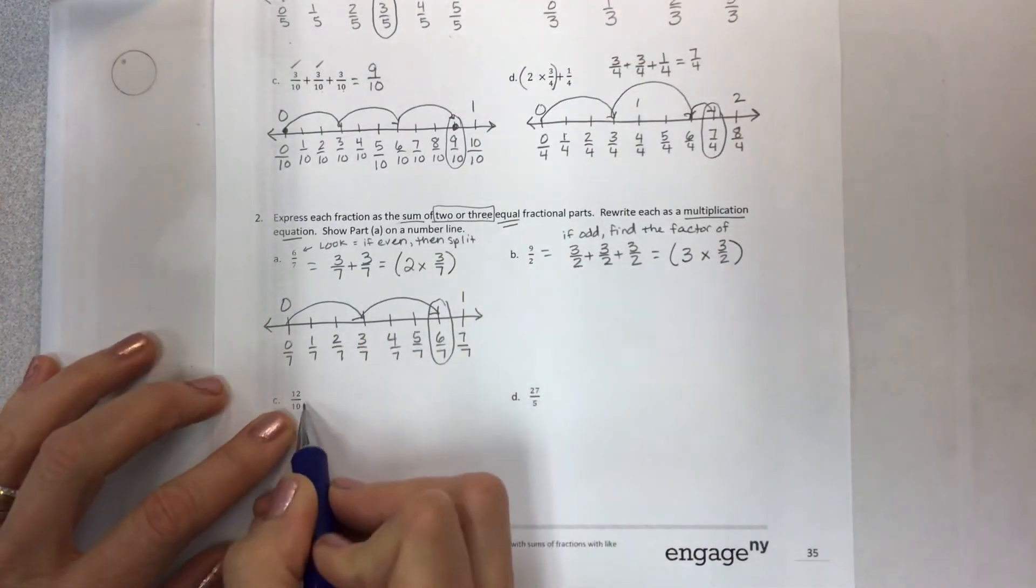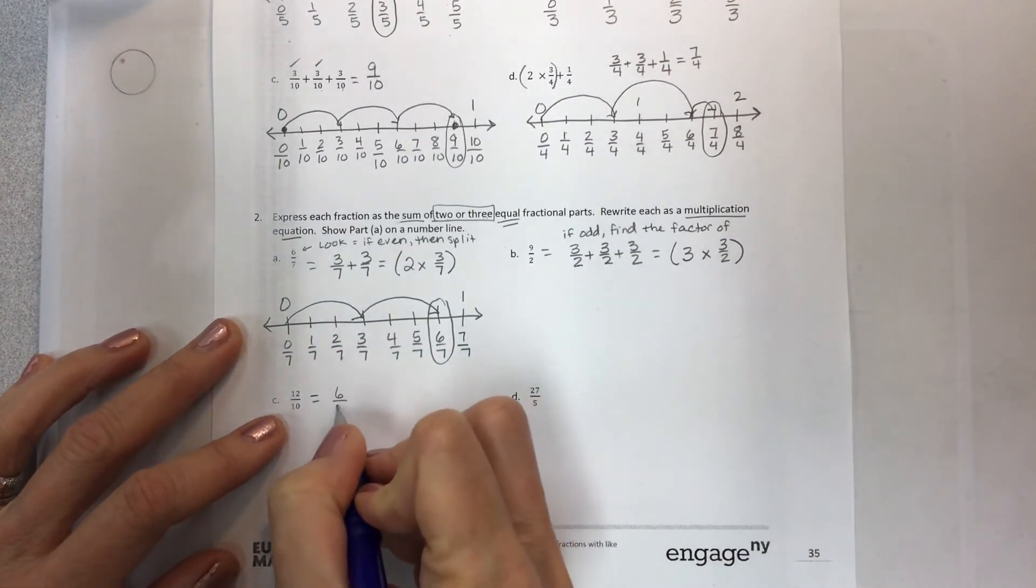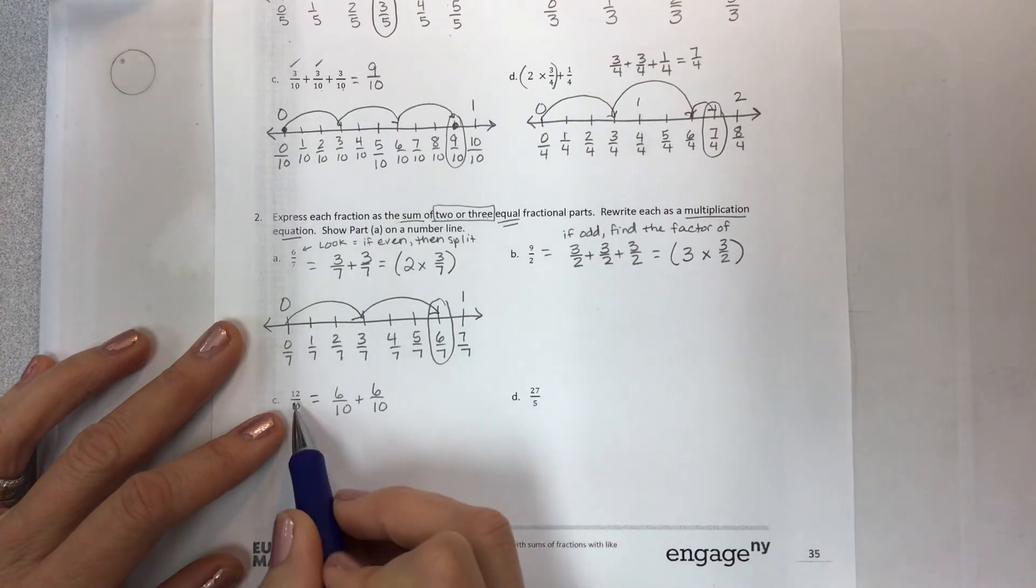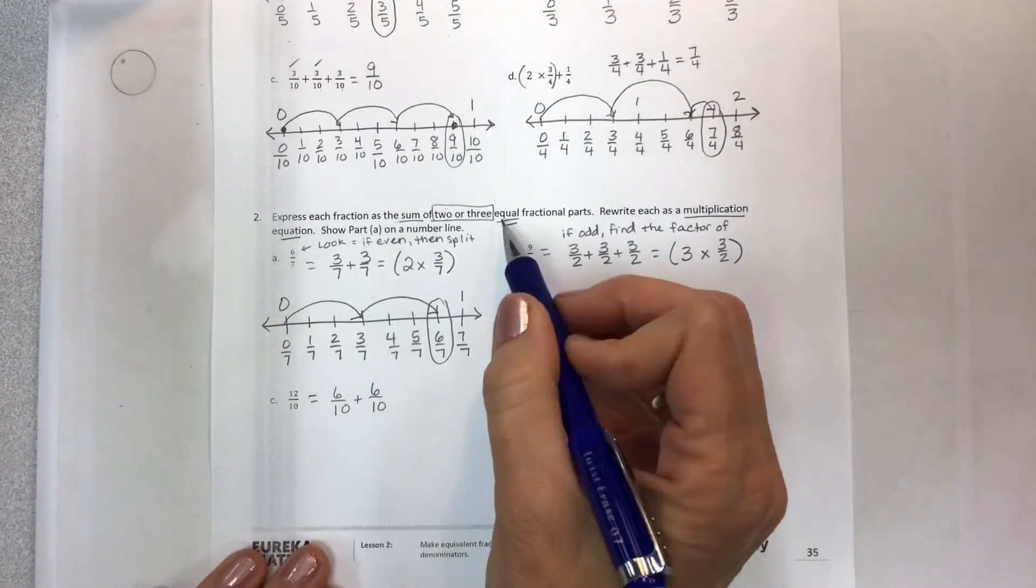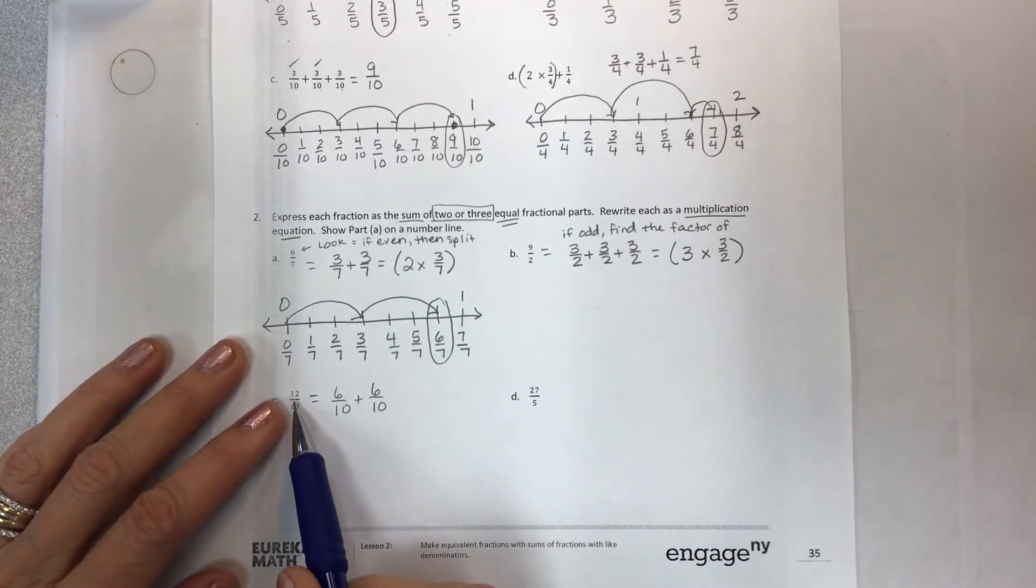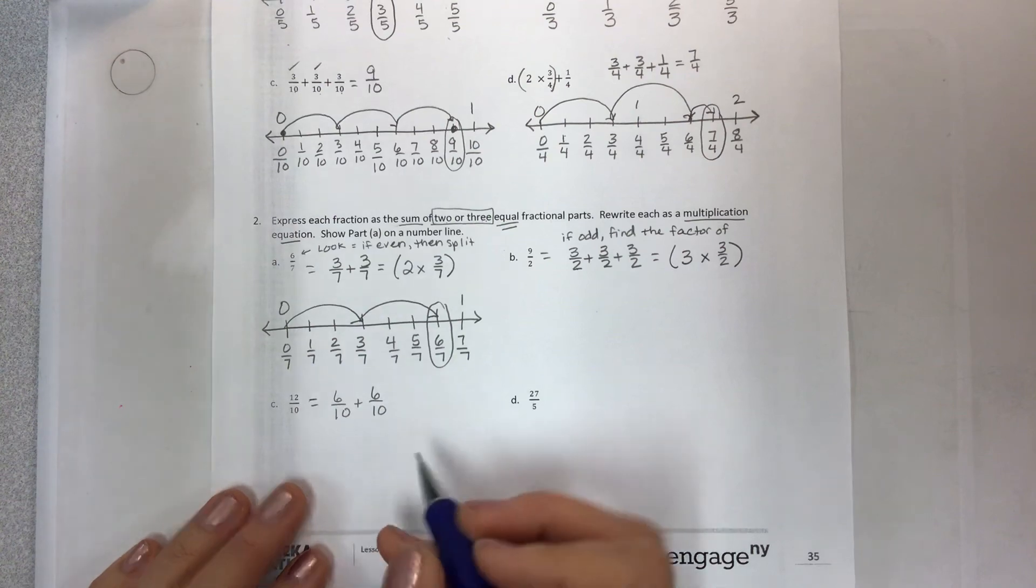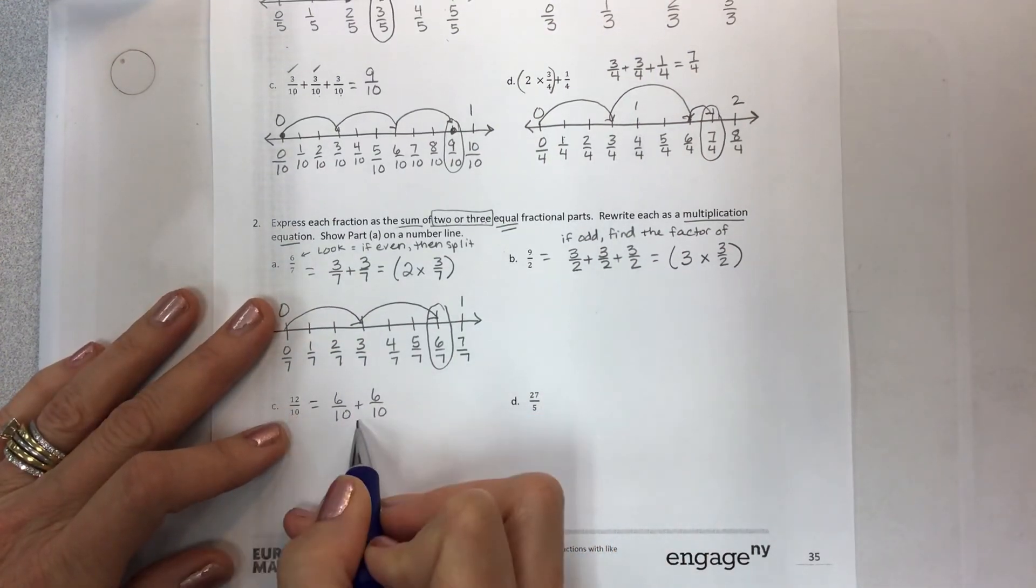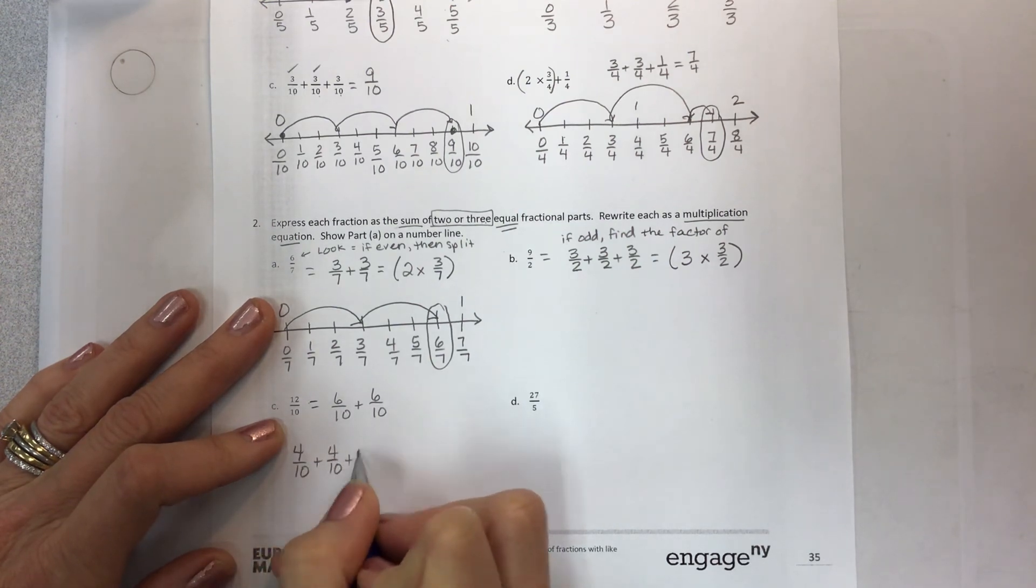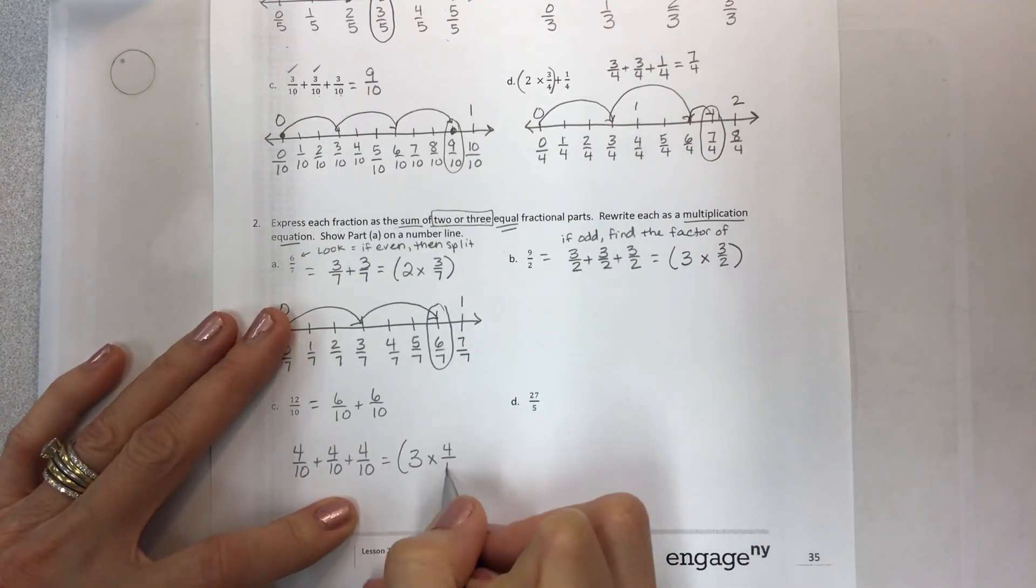Look, it's even. So split it. Now some students will say, can I do other numbers? And I would say, you know, well, six plus six is twelve, but can you do four plus four plus four? Yes, you can here because it's two or three fractional parts. You couldn't necessarily do three four times because that would be more than the two or three fractional parts. But this one is equal to 12 tenths. And if you did four tenths plus four tenths plus four tenths, that would also work. This one would be three times four tenths.